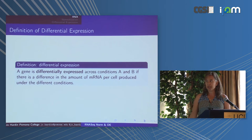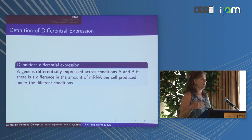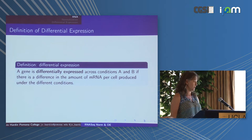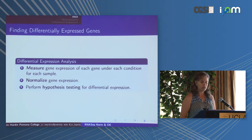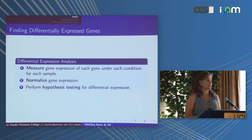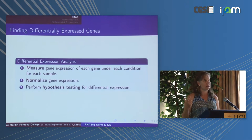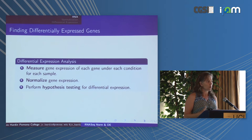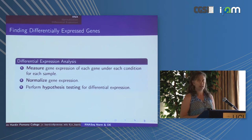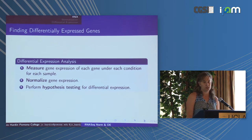The problem at hand is differential expression. A gene is differentially expressed across two conditions if there's a difference in the amount of mRNA per cell produced under the different conditions. To do this, first we measure gene expression via read counts, then there's the super important factor of normalizing gene expression, and then we do the differential expression analysis — lots of different forms of hypothesis testing depending on which method you're using.